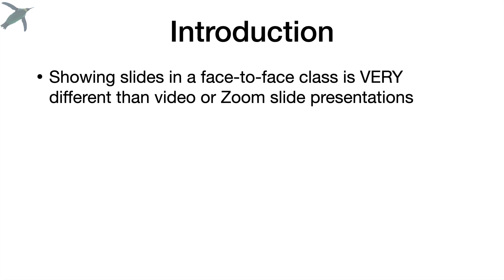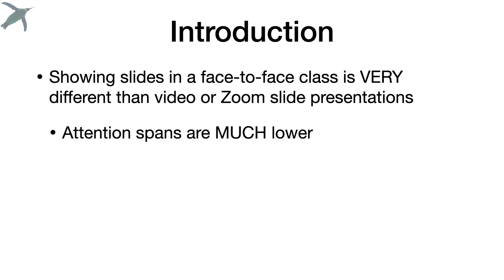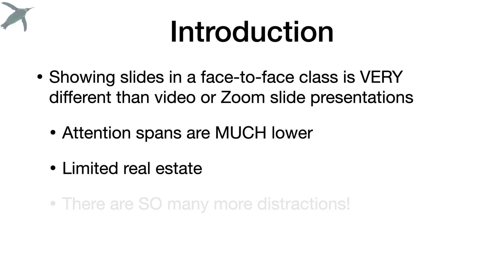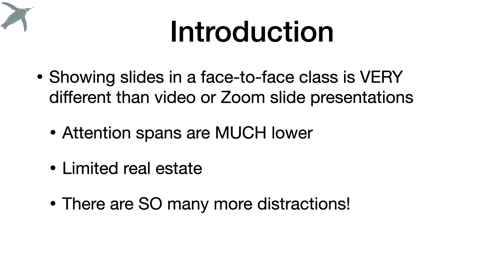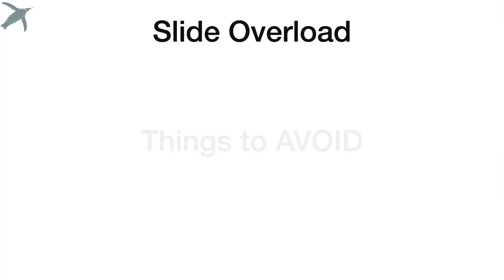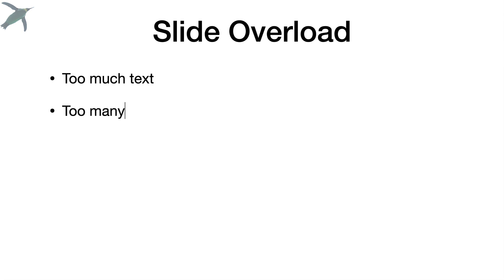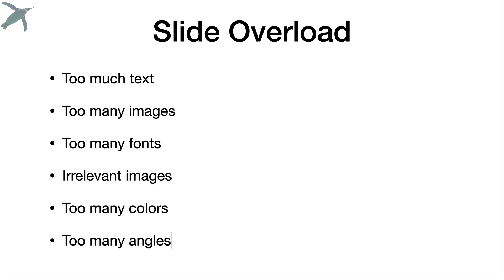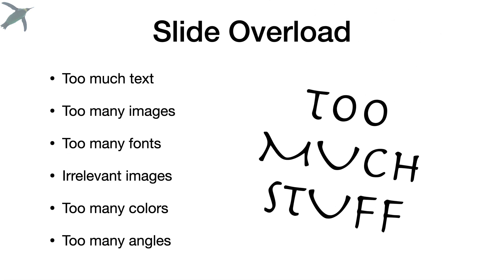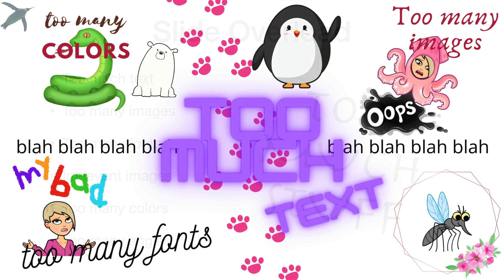Showing slides in this kind of environment is really different than a face-to-face class. Attention spans are much lower. You often have very limited real estate if your students are watching on phones, and there are so many more distractions. I want to start with some things to avoid. Slide overload — this is a big one. People try and cram everything onto these slides.